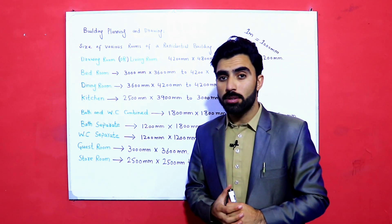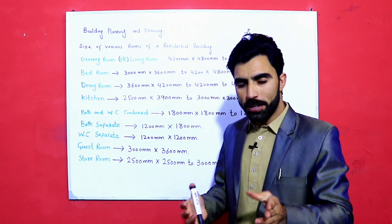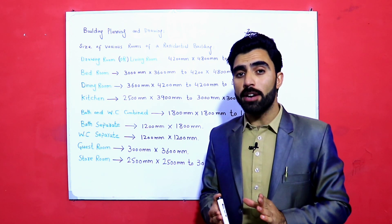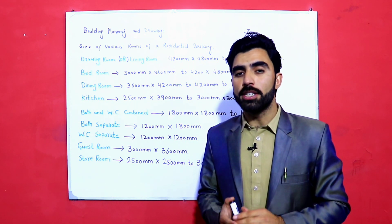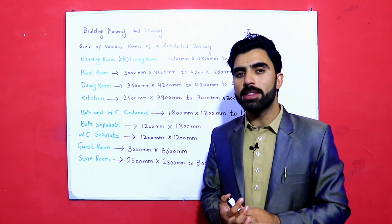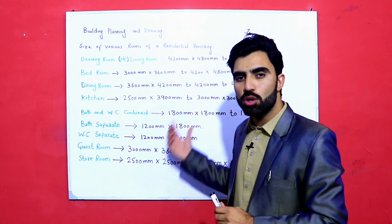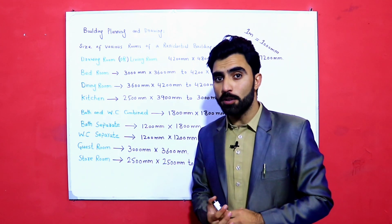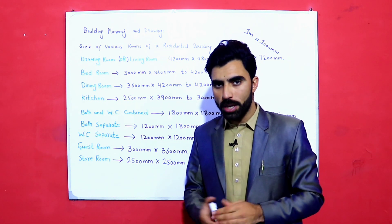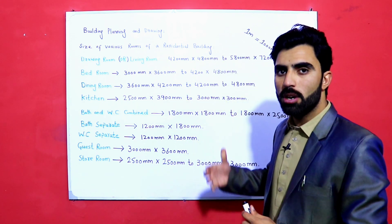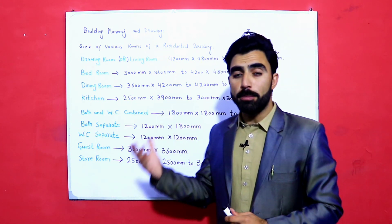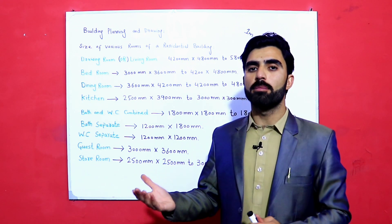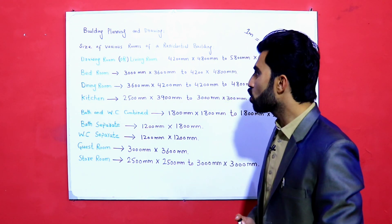If you want to convert millimeters to feet, divide by 300, since one foot equals 300 millimeters. That is the formula to convert from millimeters to feet, and from millimeters to meters.